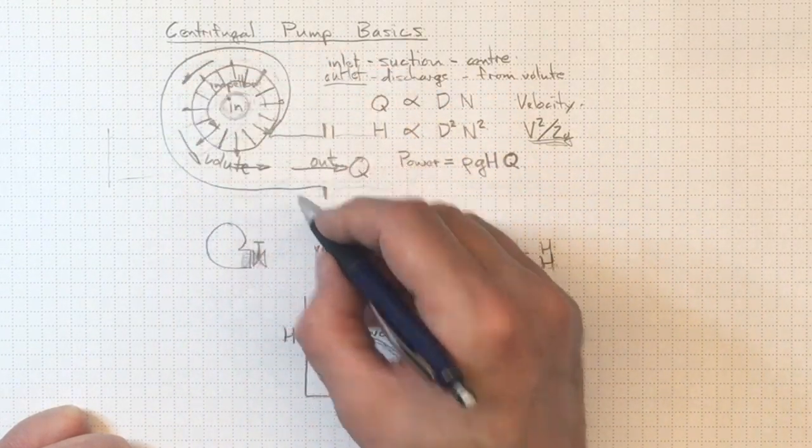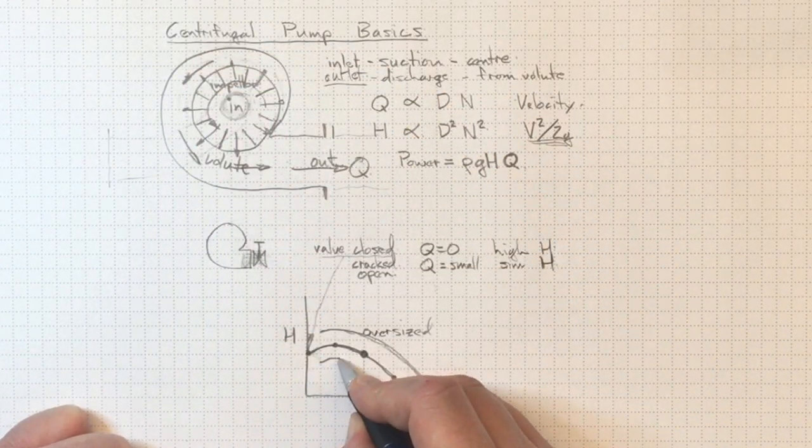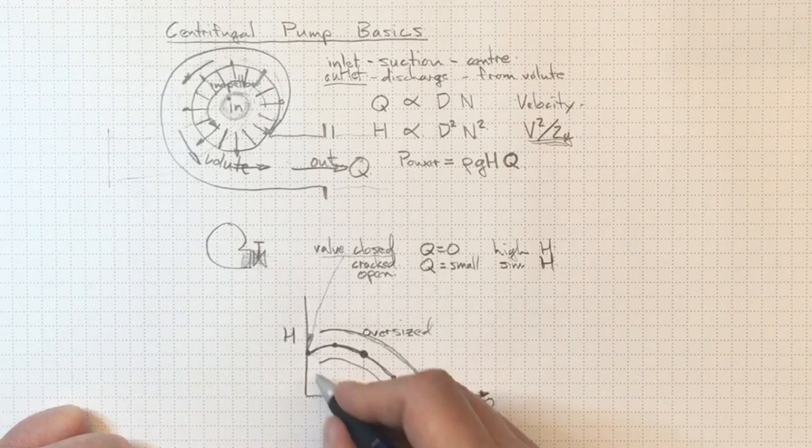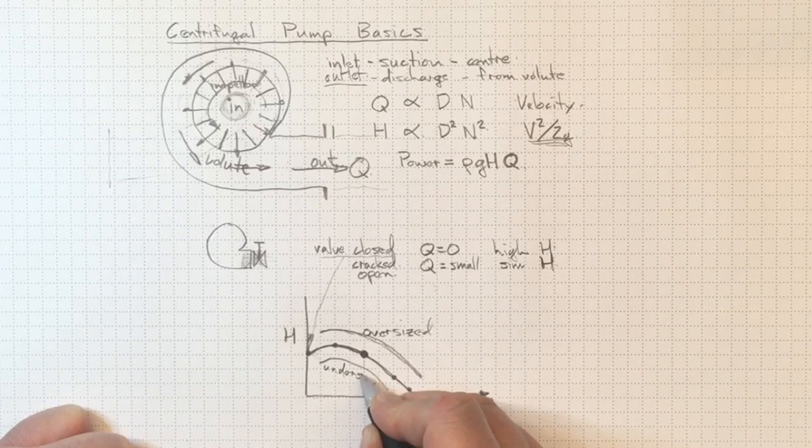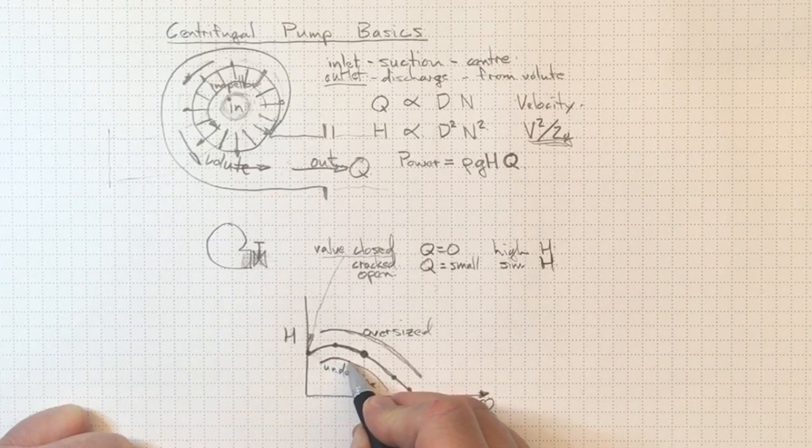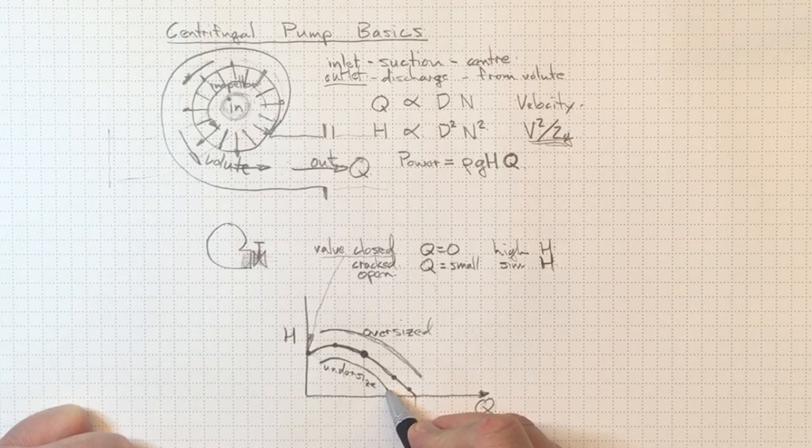We could also go to an undersized impeller. We could keep the same pump casing and go to a smaller impeller. In which case, this undersized impeller would generate a lower head at the various flow rates along the way.